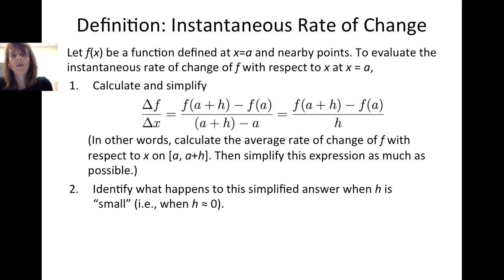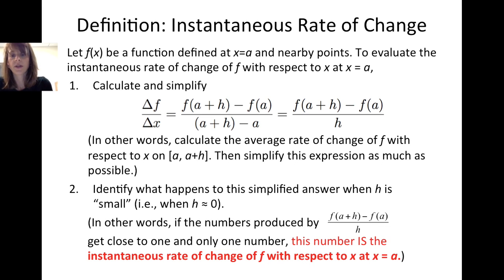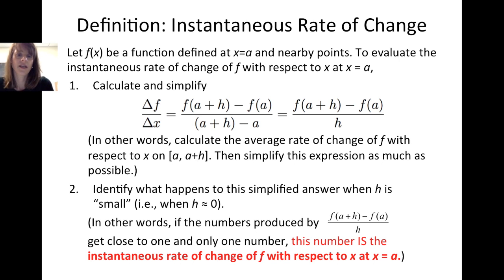Secondly, we identify what happens to this simplified answer when h is small, or when h is very close to 0. If the numbers produced by the average rate of change — f evaluated at a plus h minus f evaluated at a, divided by h — get close to one and only one number, this number is the instantaneous rate of change of f with respect to x at x equals a.